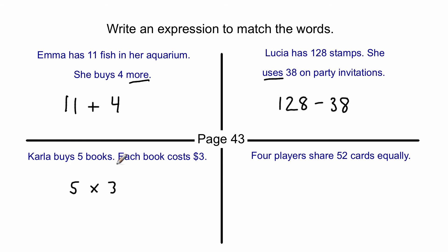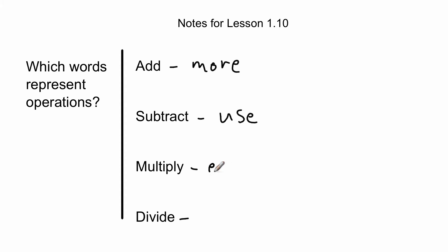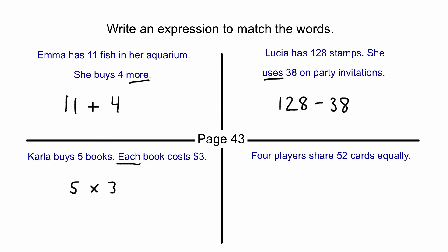Each doesn't always mean multiplication, but in this case, we're talking about adding $3 for every five books. So five times three. And so we're going to add each to our multiplication notes and move on to the last one.